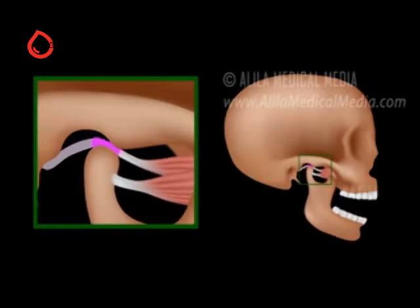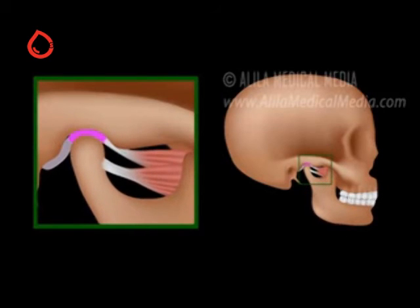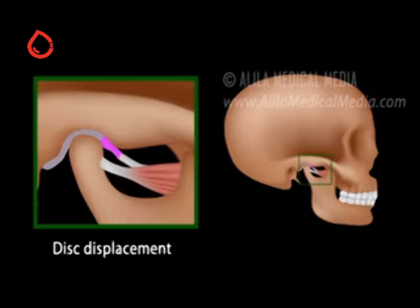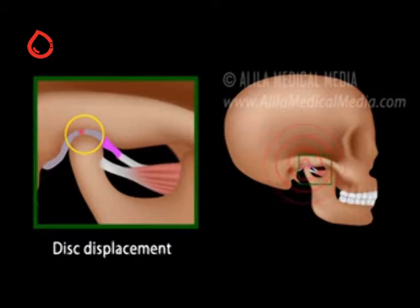The most common disorder of the TMJ is disc displacement, and in most cases the disc is dislocated anteriorly. As the disc moves forward, the retrodiscal tissue is pulled in between the two bones. This can be very painful as this tissue is fully vascular and innervated, unlike the disc.